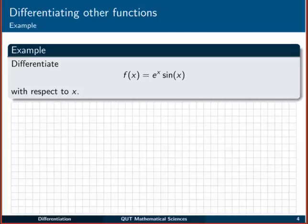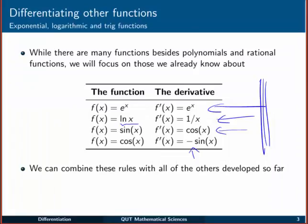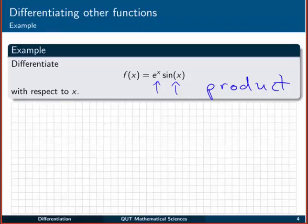f of x in this example is e to the x, the exponential, multiplied by sin x. So we have a product of two functions, e to the x and sin x is our product. And we want to find the derivative of that. So we're going to use our rules from this page, e to the x and sin x, so this one here and this one here. We're also going to use the product rule. So if you haven't looked at the product rule video yet, make sure that you do look at that first.